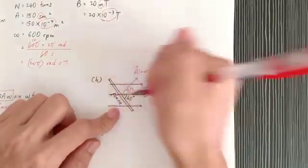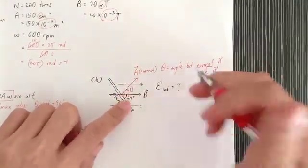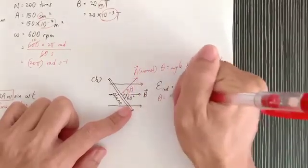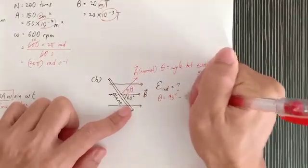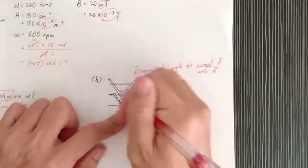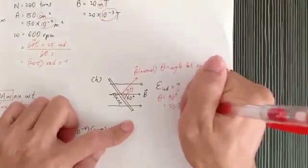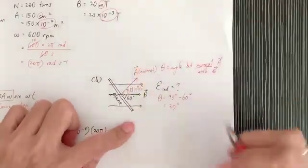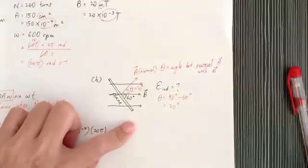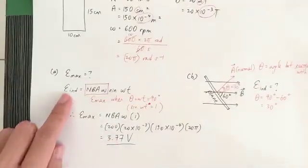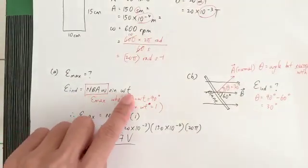And how to find the theta? Theta is of course 90 minus 60. Because normal and plane is 90 degree. So 90 minus 60, we get 30 degree. So this one is 30 degree. So we use back the formula for this one. N B A omega sine omega T. Omega T is actually theta. So E equal to N B A omega sine theta. Because actually this theta is omega T. Like last time S equal to U T. So remember, in linear motion? Theta is S. Omega is velocity. So okay.